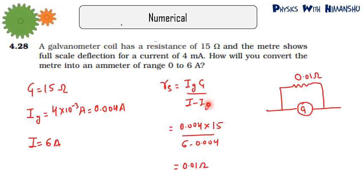If you put all the values and see, 0.004 is much much lesser than 6, so if you ignore this thing the answer will be 0.01 ohm. So this is basically how we have converted the galvanometer to an ammeter.